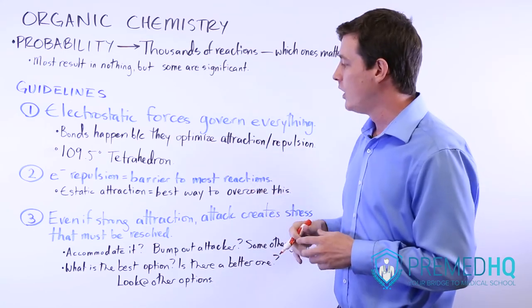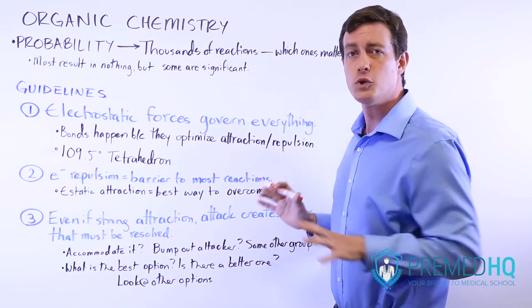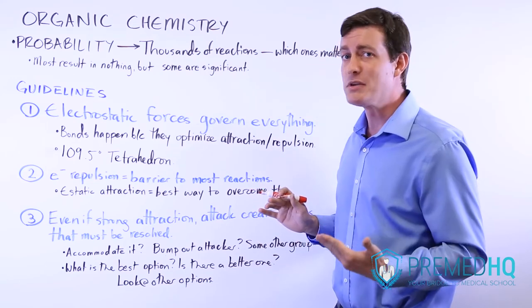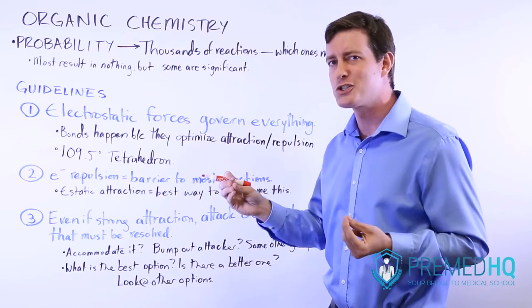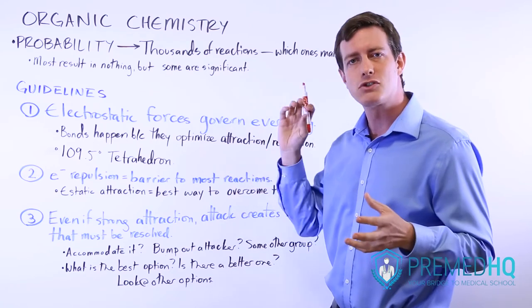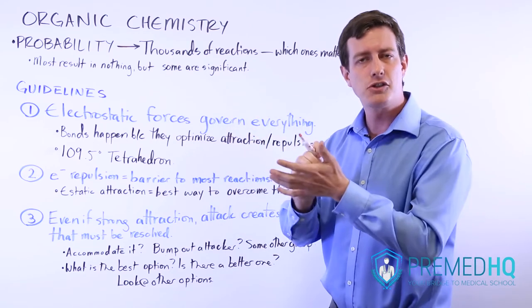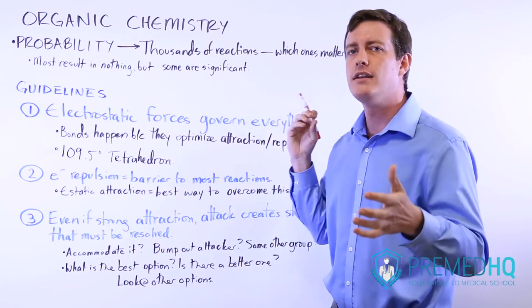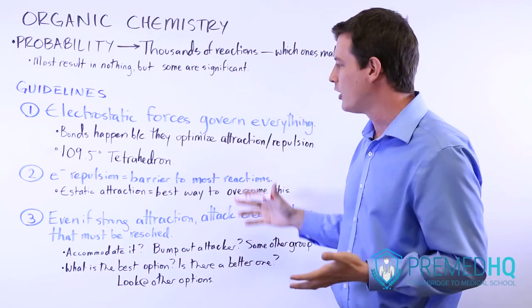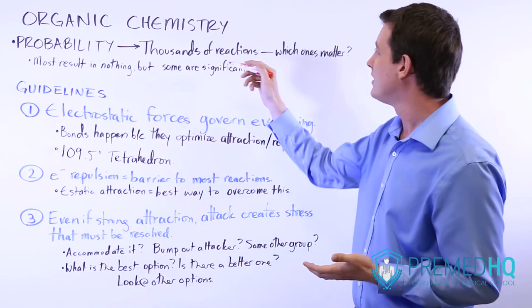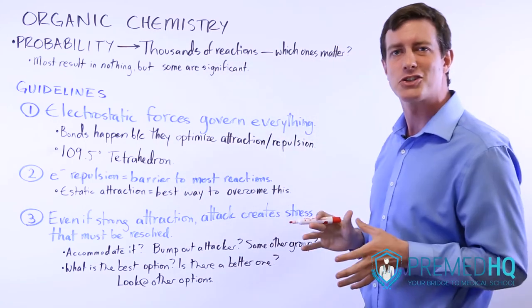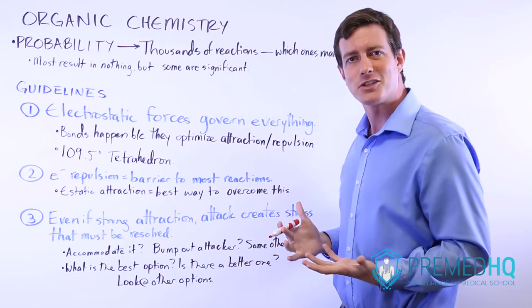Later on, we'll get to some ground rules of organic chemistry. One of them is to look for the most strongly charged species. Oftentimes strongly charged species have attraction or repulsion, but the attraction is enough to overcome this barrier. That's a good clue that could be the reaction that actually occurs and matters.